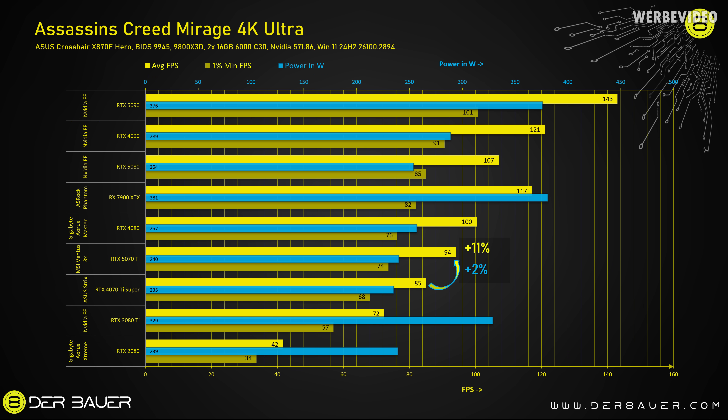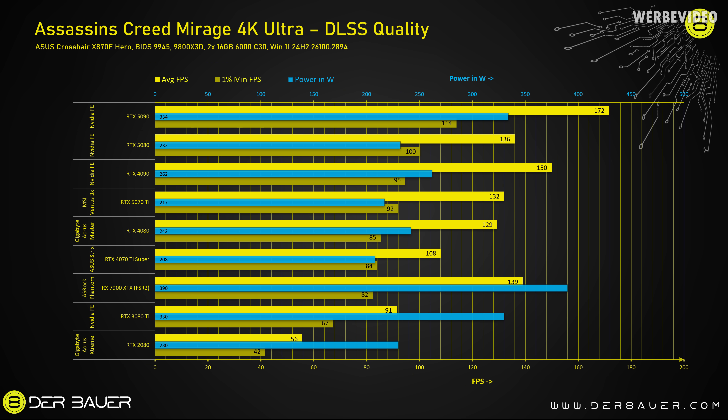In Assassin's Creed Mirage, the 5070 Ti is 11% faster than the 4070 Ti Super while consuming about the same power, and it's about 6% behind a 4080. Interestingly, if we enable DLSS quality, the 5070 Ti now beats the 4080 — which might be due to Blackwell being a newer GPU more focused on DLSS features. Compared again to the 4070 Ti Super, the 5070 Ti is 20% faster with DLSS enabled.